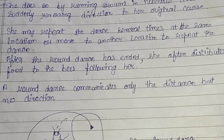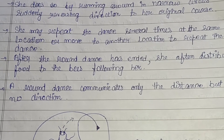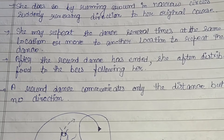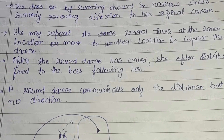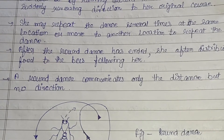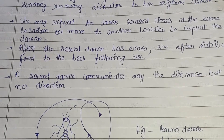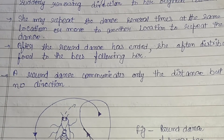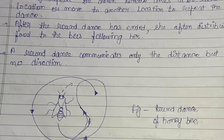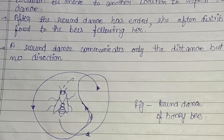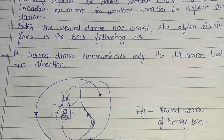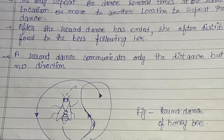She may repeat the dance several times at the same location, or move to another position to repeat it. After the round dance ends, she often distributes food to the bees following her. Importantly, the round dance communicates only the distance — not the direction — of the food source, which is within 50 meters of the beehive.